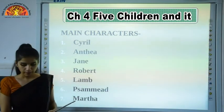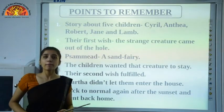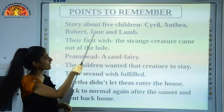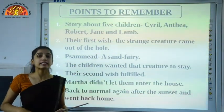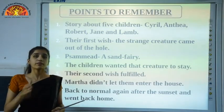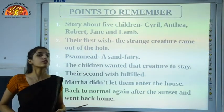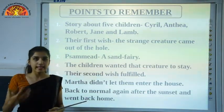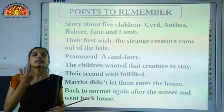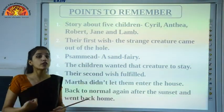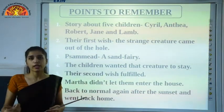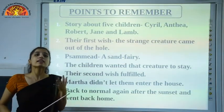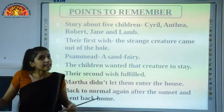This story is about the five children — Cyril, Enthya, Robert, Jane, and Lam. They were building a sand castle in a big gravel pit when they came across a strange creature. On being insisted by Enthya, that creature came out of the hole — that was their first wish. The strange creature was Simeet, a sand fairy who granted wishes.